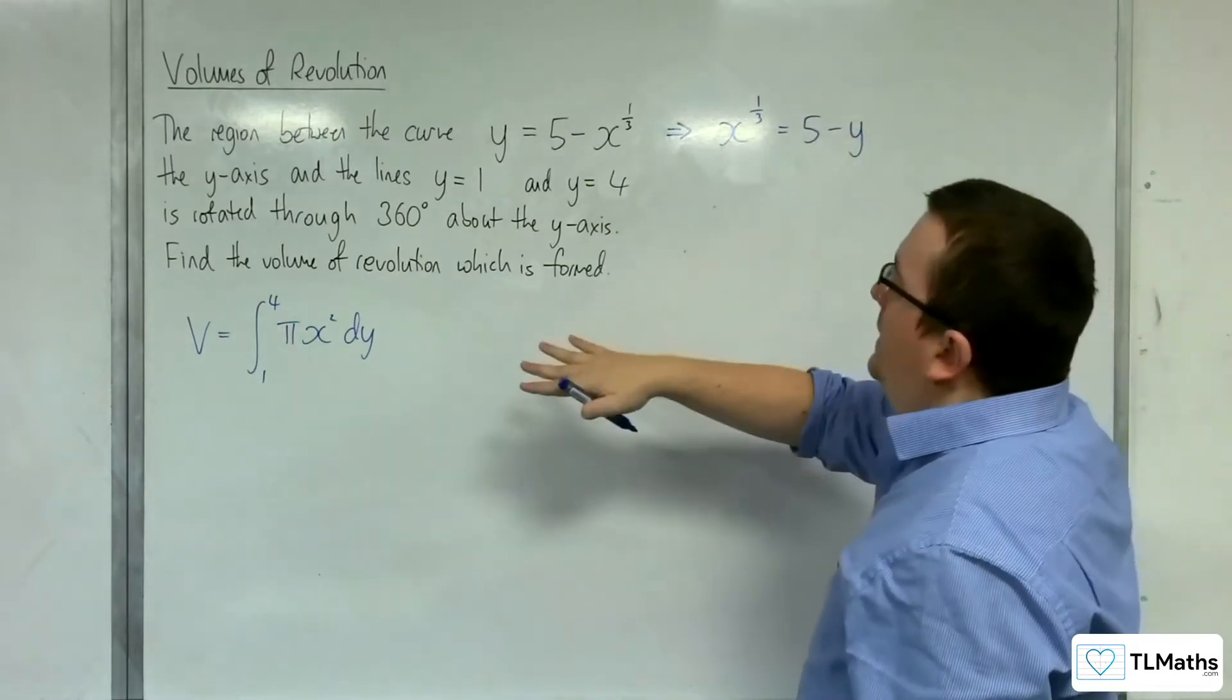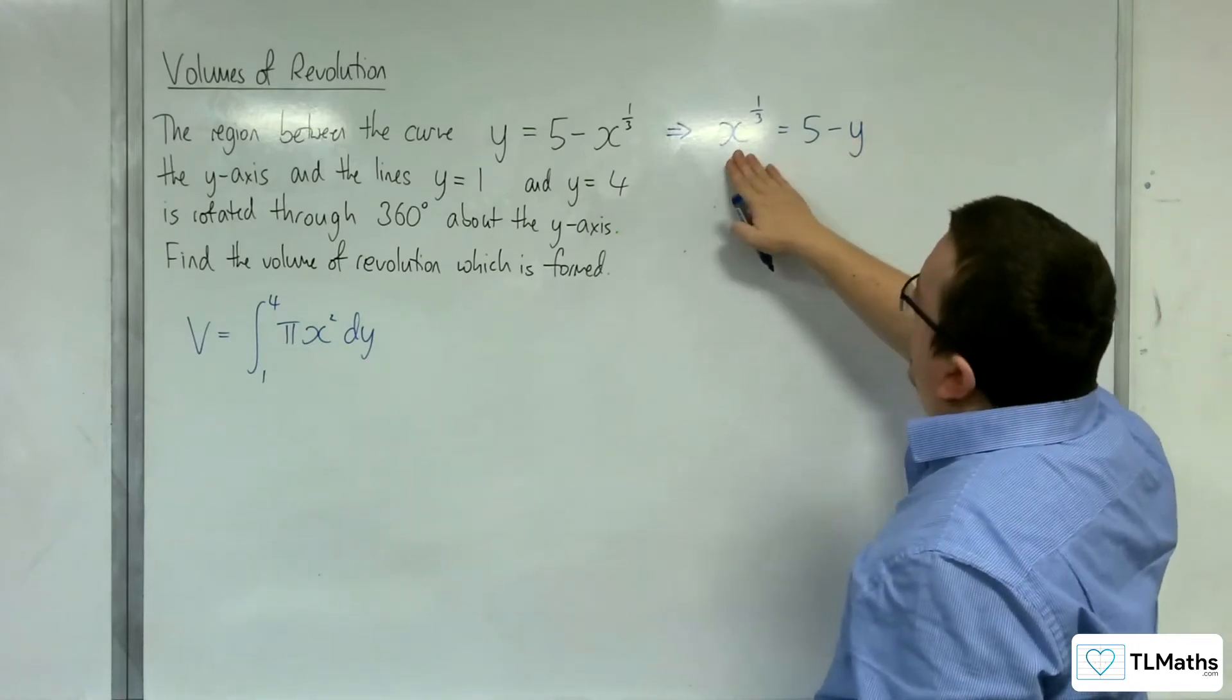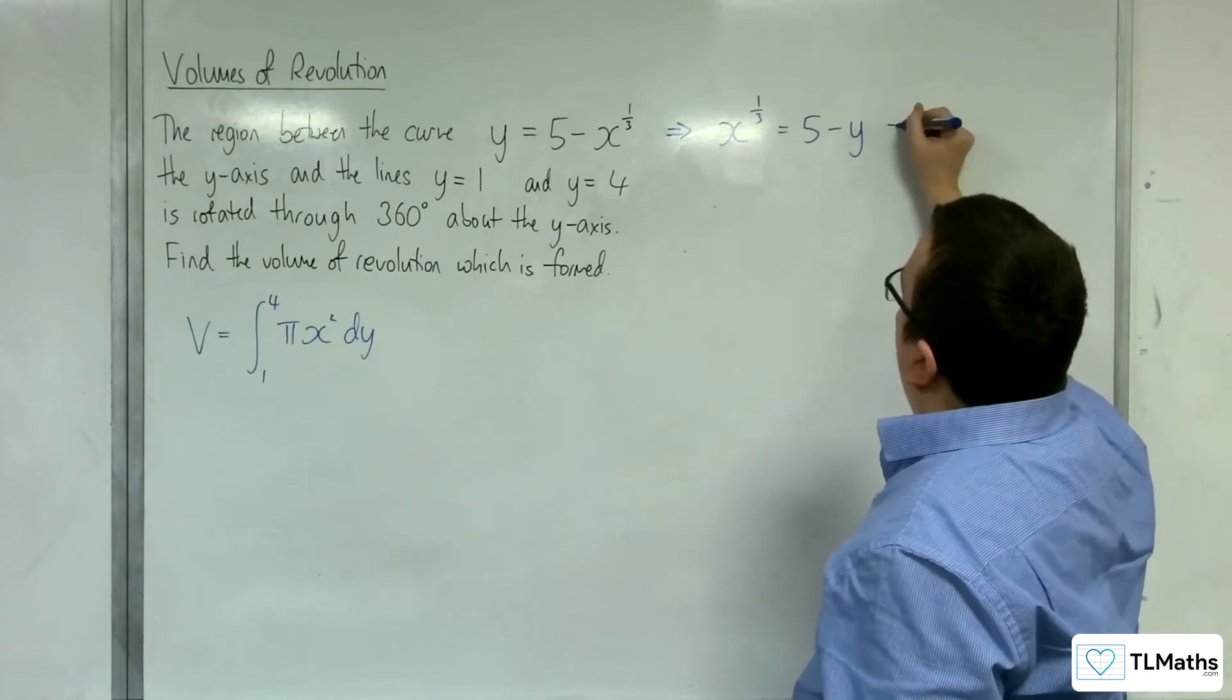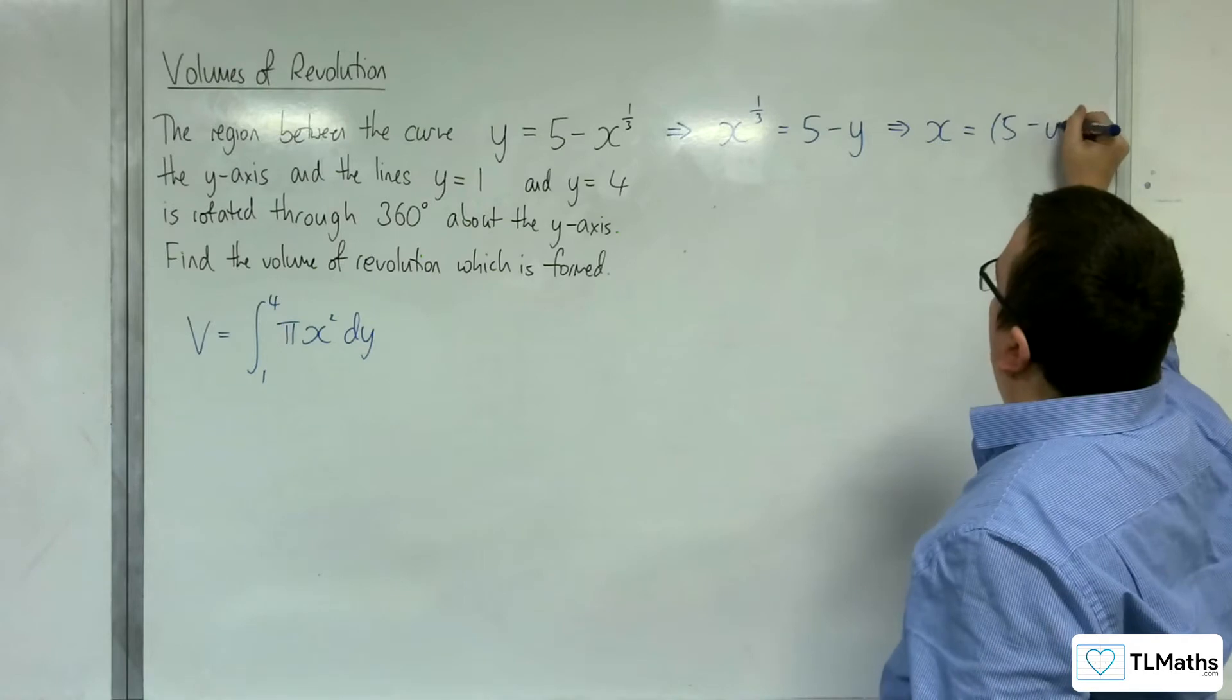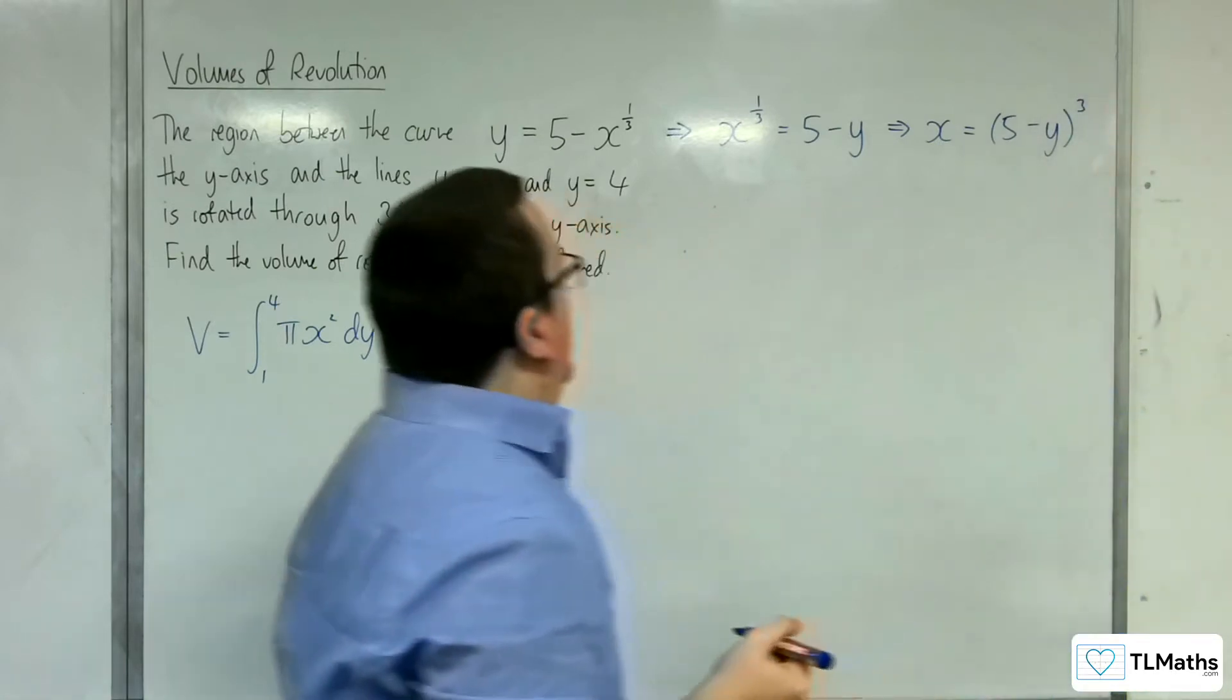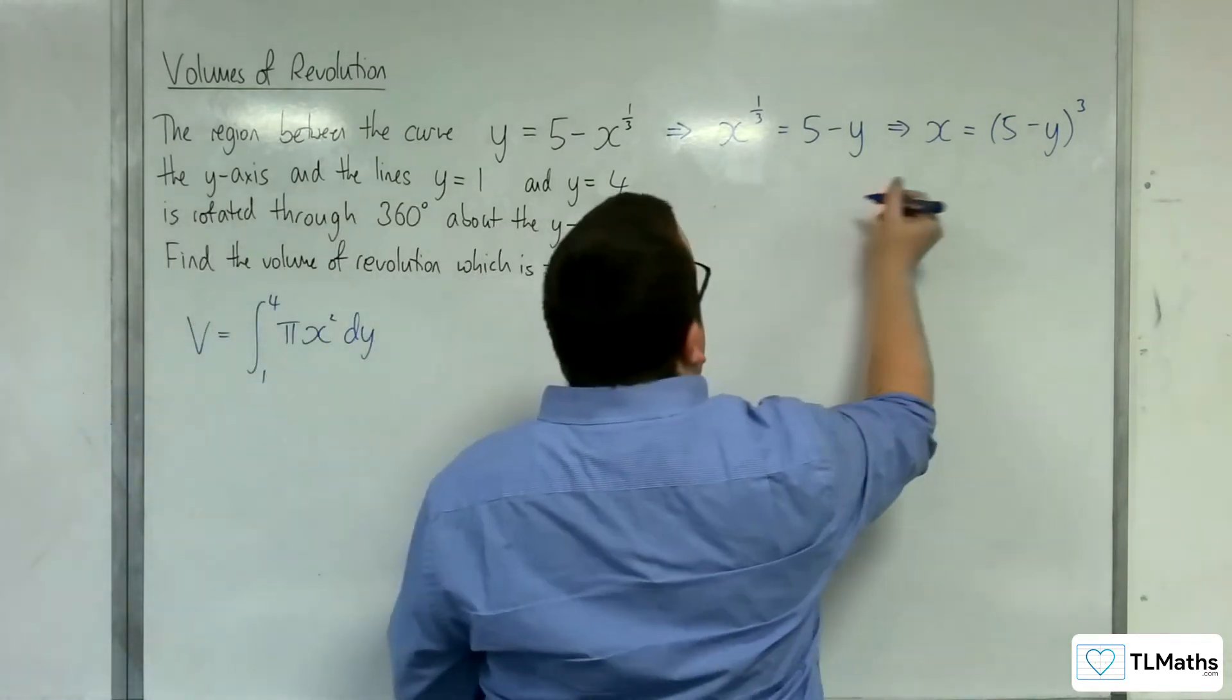Now, I need to get x squared, remember. So if I cube both sides, I'm going to get x equals 5 take away y cubed. But I still now need to get x squared, so I'm going to square both sides.